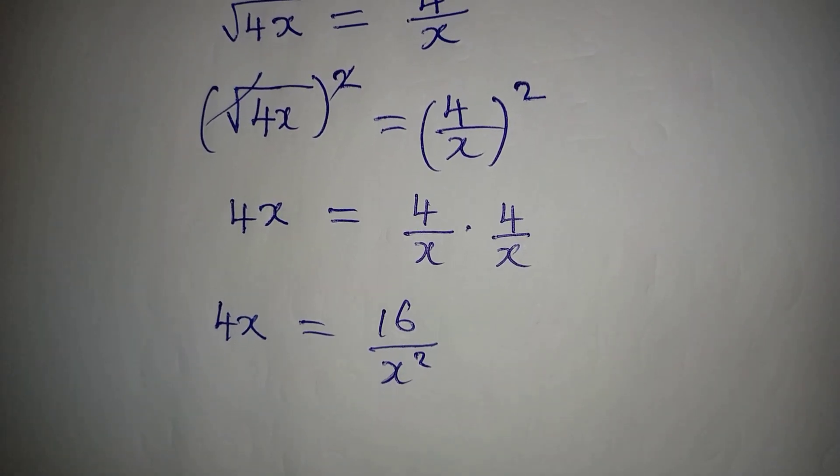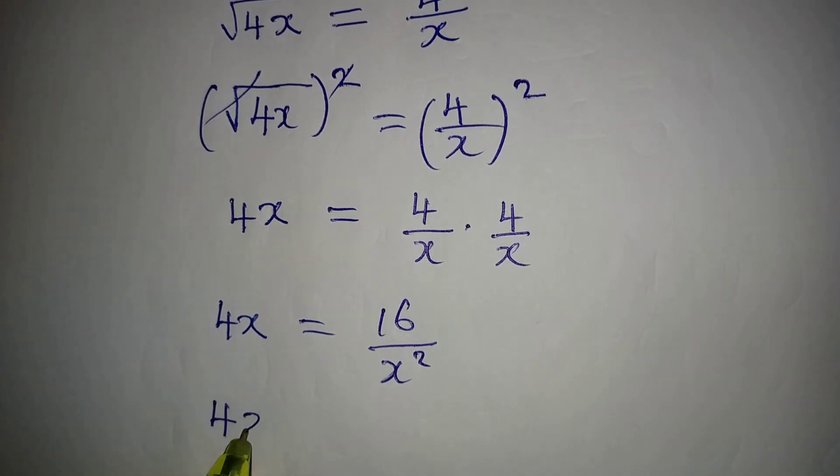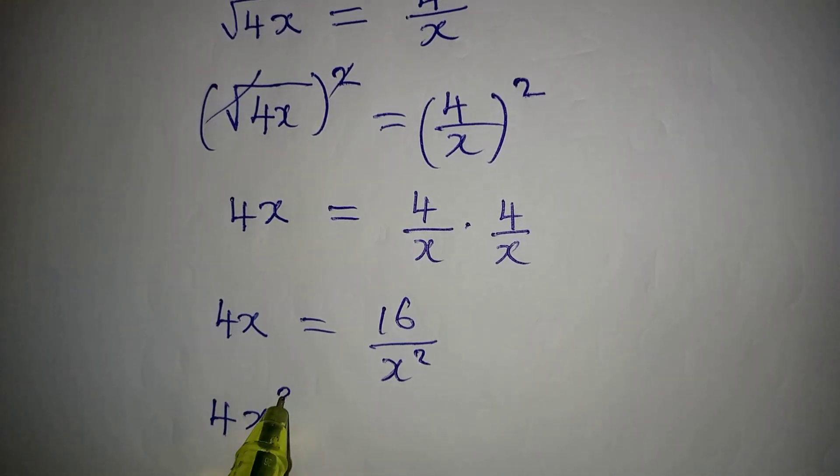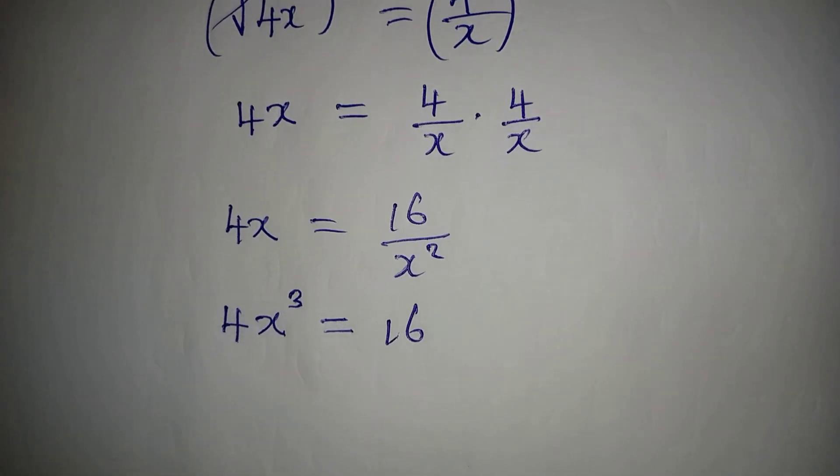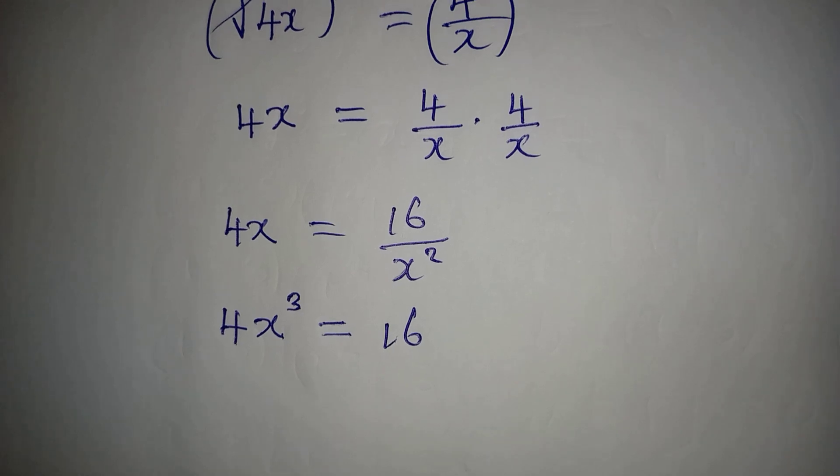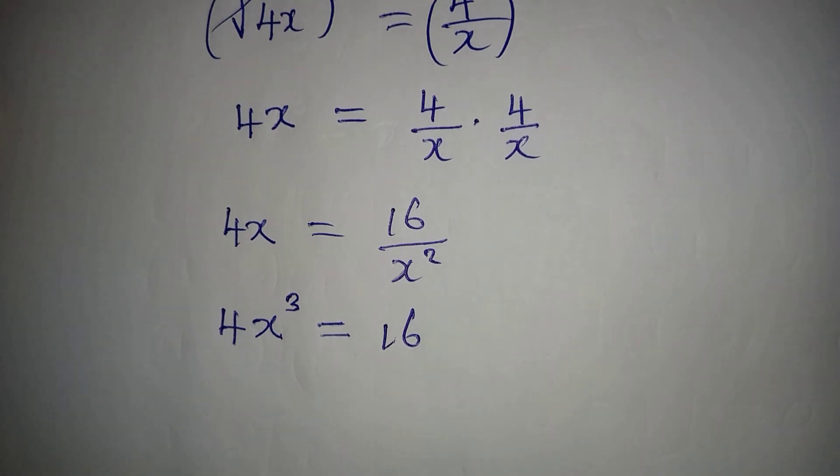So if we cross multiply, we're going to get 4x to the power of 3 equal to 16. Okay, remember the question says we should get only the real solution, right? So from here, what can we do?